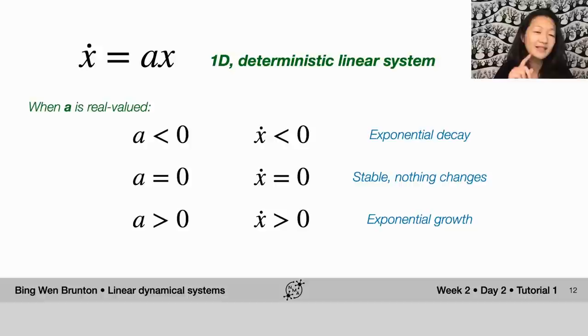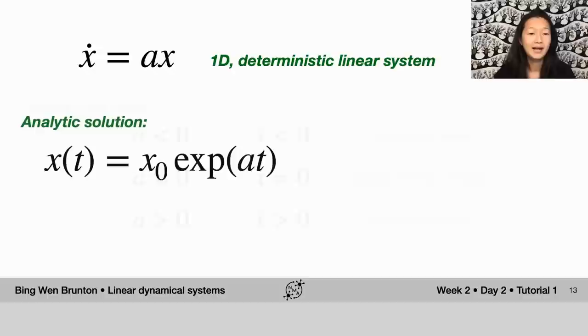then x dot is less than zero, which means we have exponential decay. These are the kinds of systems that people popularly use to model things like the radioactive decay of elements.